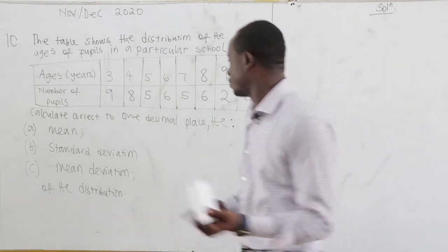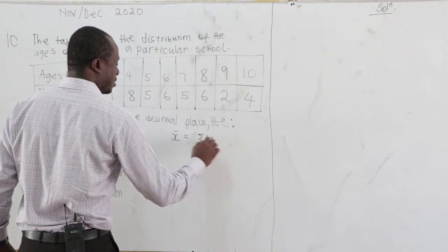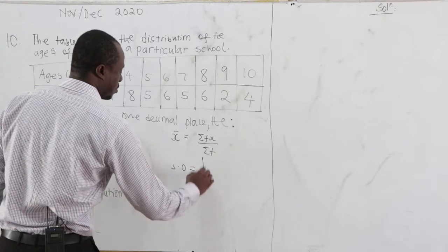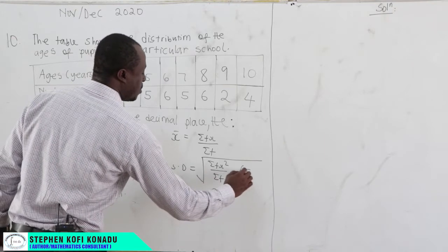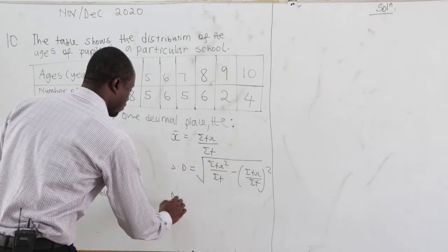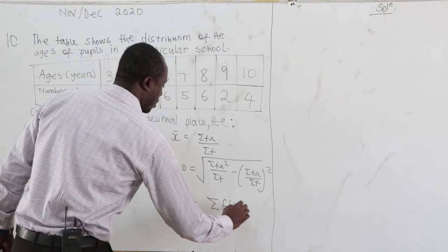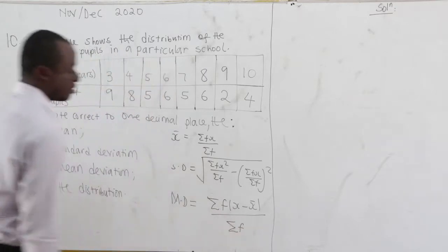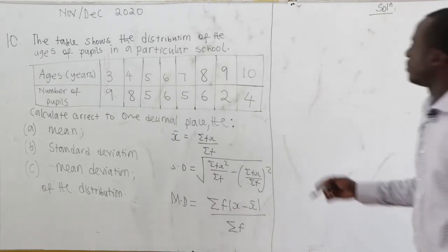The formula for the mean is: mean = Σfx / Σf. The standard deviation formula is: SD = √(Σfx² / Σf − mean²). The mean deviation formula is: MD = Σf|x − mean| / Σf. With these formulas, we can set up our table.